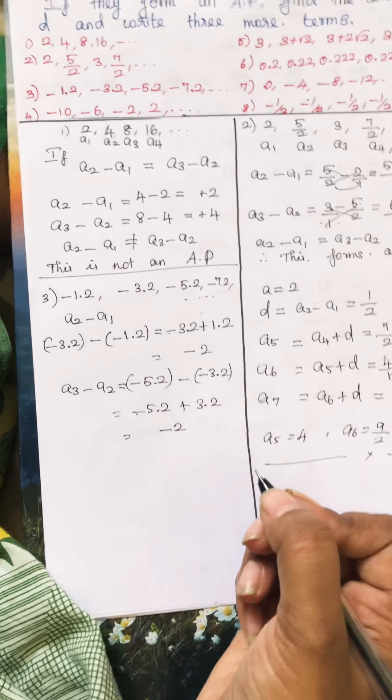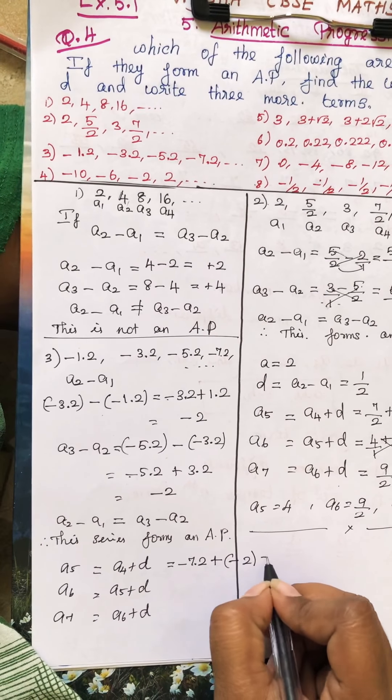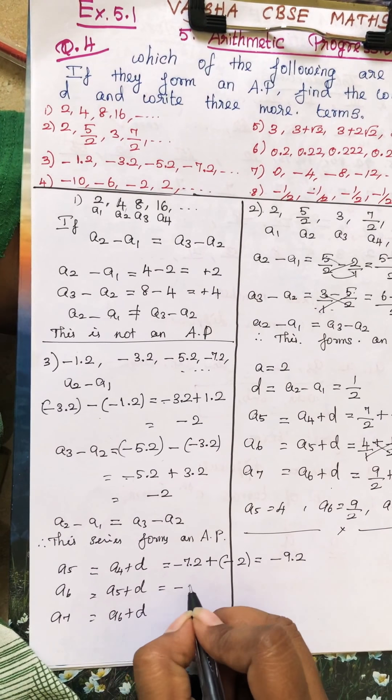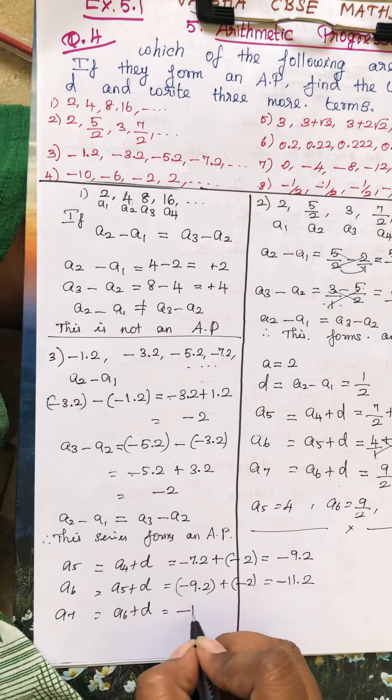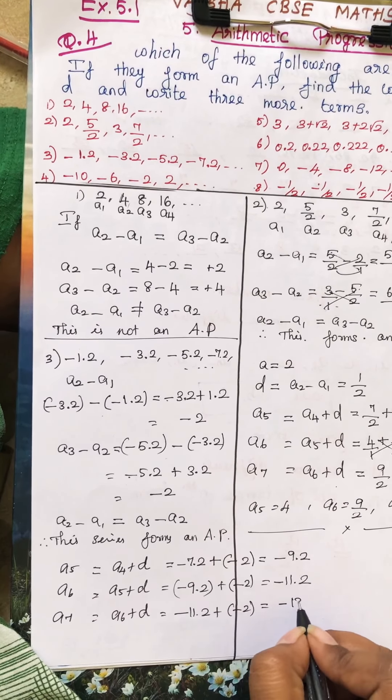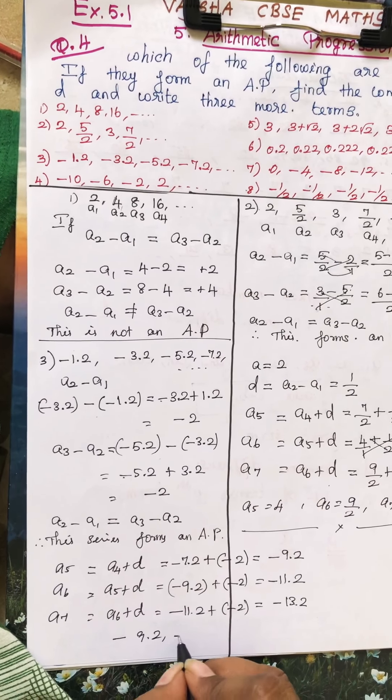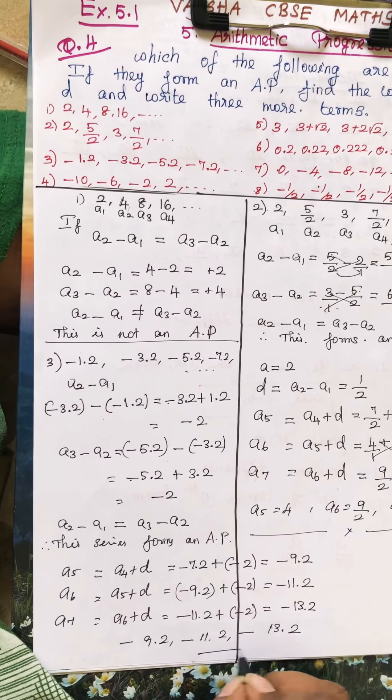Now find the next 3 terms: A5, A6, and A7. A4 is given as minus 7.2 and D is minus 2. So A5 equals minus 7.2 plus (minus 2) equals minus 9.2. Then A6 equals minus 9.2 plus (minus 2) equals minus 11.2. Then A7 equals minus 11.2 plus (minus 2) equals minus 13.2. The next 3 terms are minus 9.2, minus 11.2, and minus 13.2.